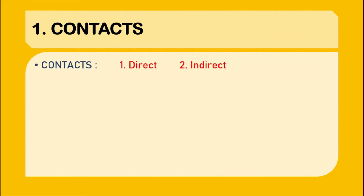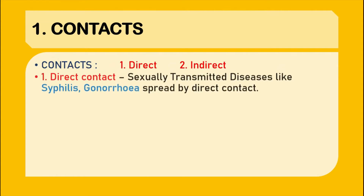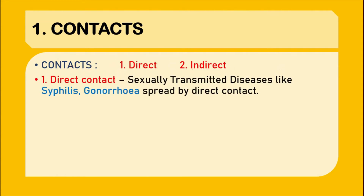The first mode of infection is contacts. In contacts there are mainly two parts: direct and indirect. In direct contact, there is a direct contact of the individual that can transmit the infection. The best example is sexually transmitted diseases like syphilis, which is caused by Treponema pallidum, or gonorrhea, which is caused by N. gonorrhoeae, and these diseases are spread by direct body contact — that is the mode known as direct contact.